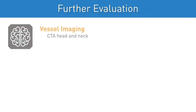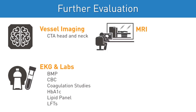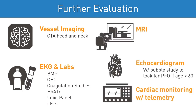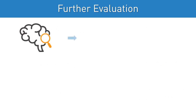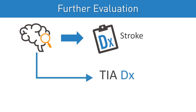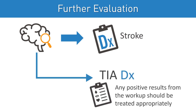The evaluation of patients with TIA should also include vessel imaging, EKG and labs, MRI, echocardiogram, and cardiac monitoring with telemetry. If evidence of brain infarct is found, the diagnosis of stroke is made. Otherwise, the patient can be diagnosed with TIA, and any positive results from the workup should be treated appropriately.